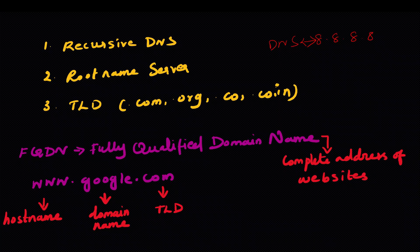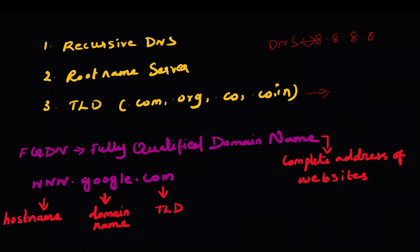We can identify a website. FQDN is a Fully Qualified Domain Name. We can use the complete website address — for example, www.google.com. For DNS, the host name is the 'www' part, 'google.com' is the domain name, and '.com' or '.org' is the top-level domain.